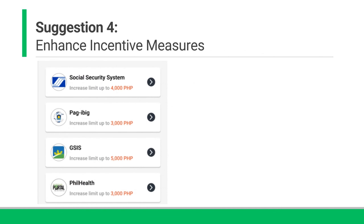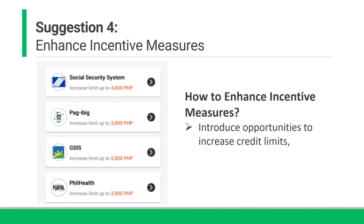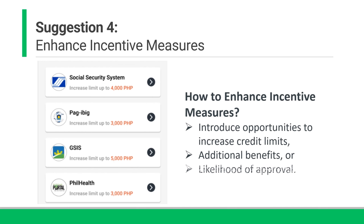To incentivize users to take action, more appealing incentive measures can be introduced. For example, opportunities to increase credit limits, obtain additional benefits, or enhance the likelihood of approval can be promised. These incentive measures make users more willing to actively participate and complete the required actions.